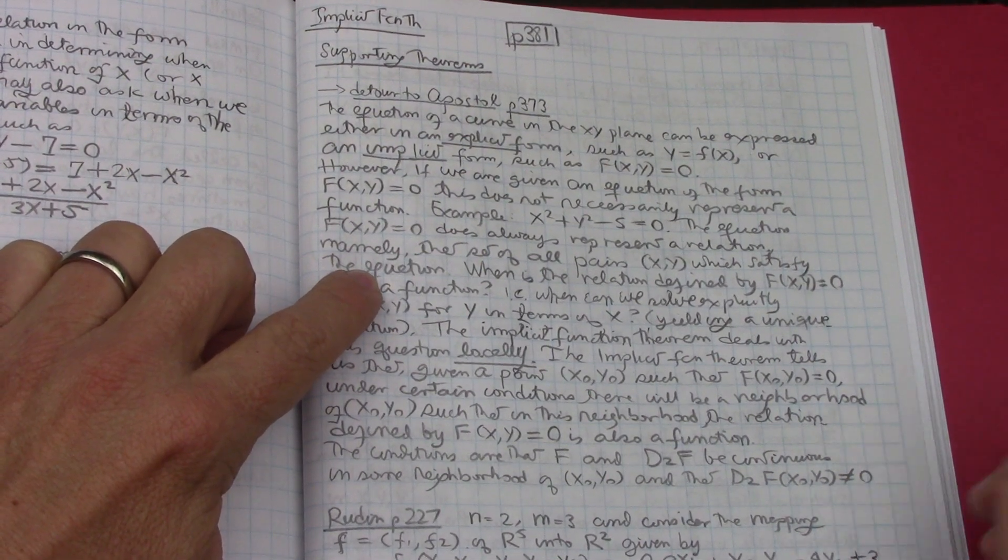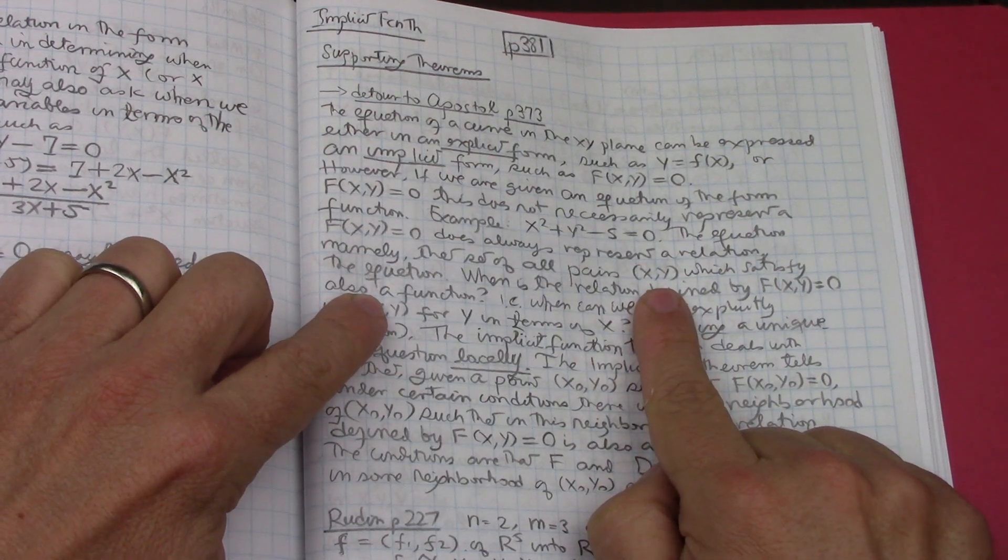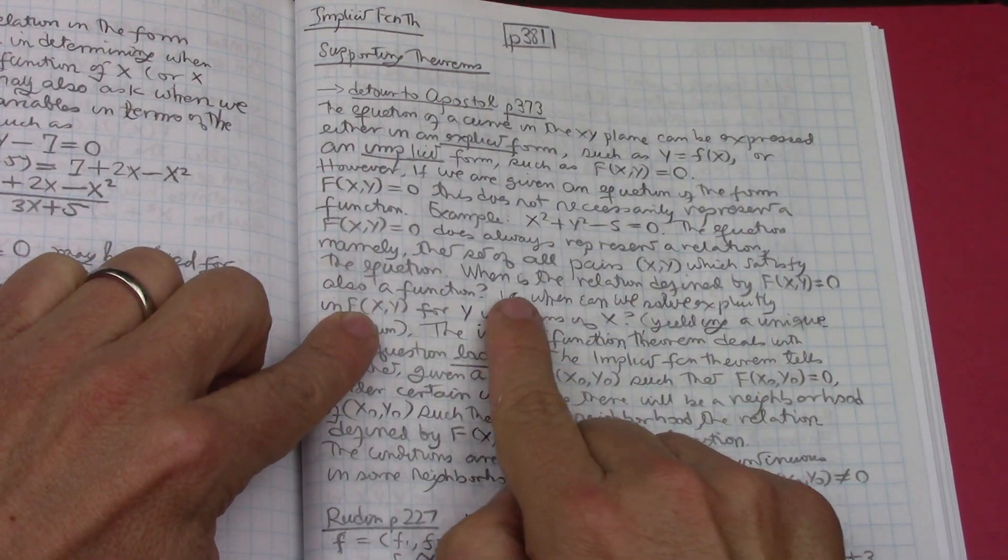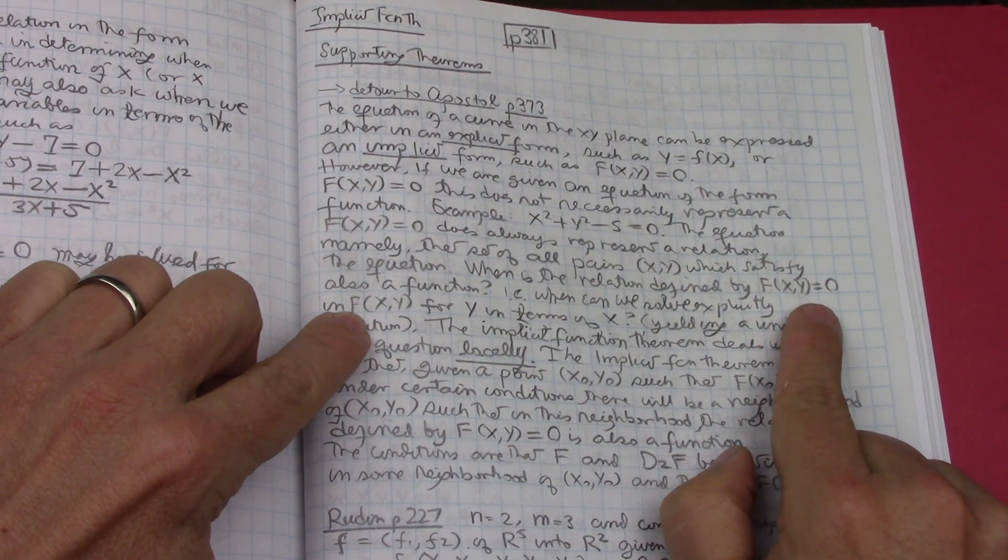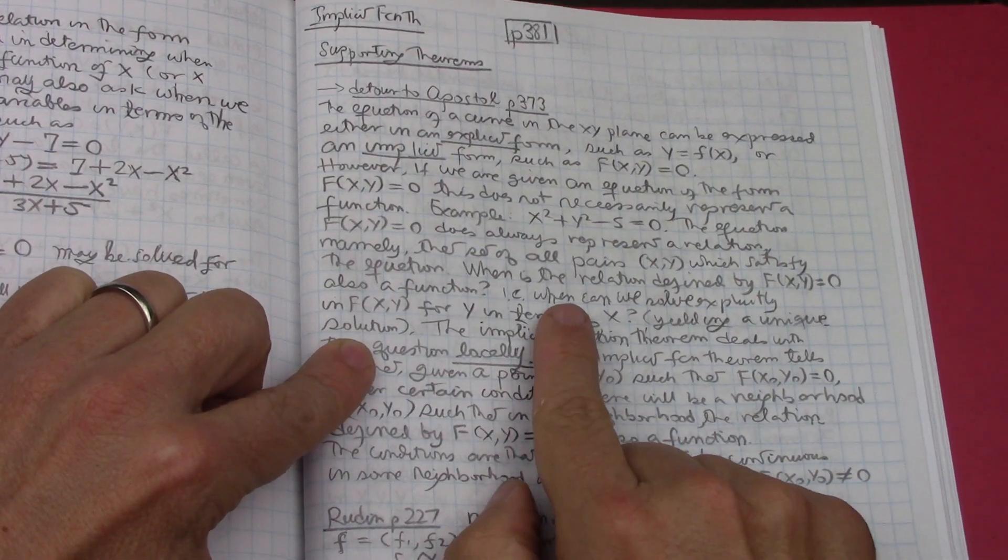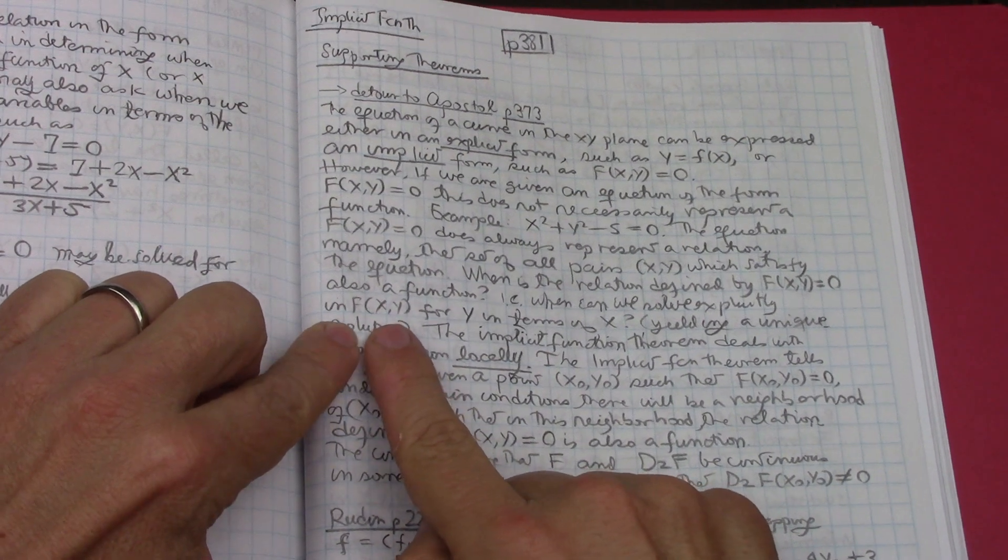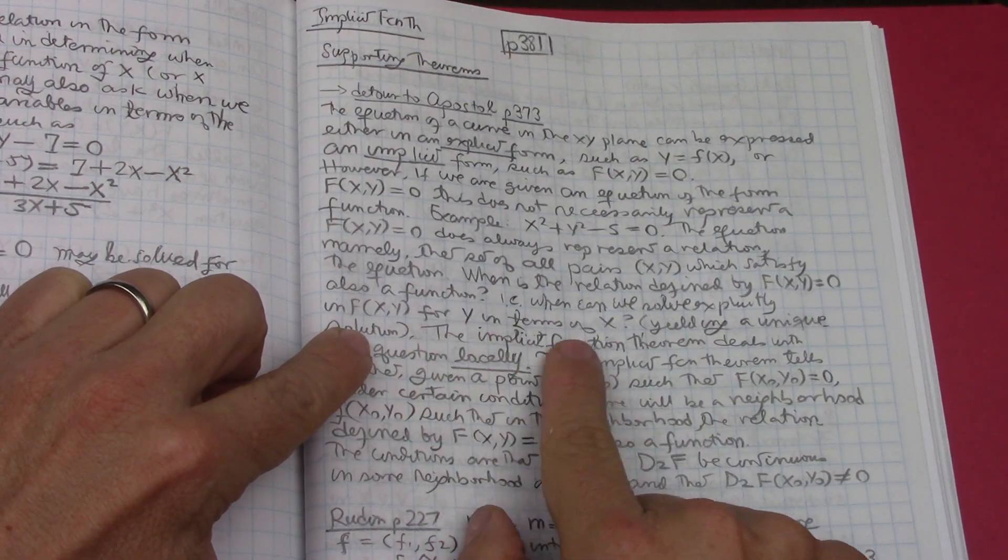The equation f(x,y) equals zero doesn't always represent a relation, namely that set of all pairs (x,y) which satisfy the equation. When is the relation defined by f(x,y) equals zero also a function?